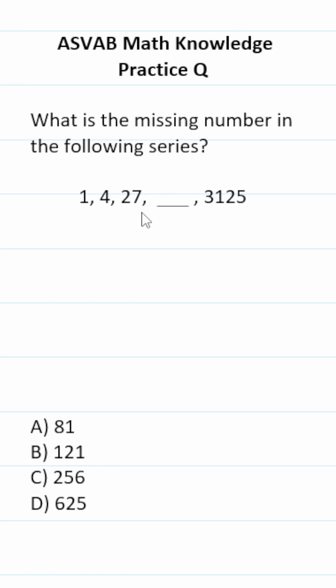What is the missing number in the following series? We have 1, 4, 27 blank, and then 3,125.